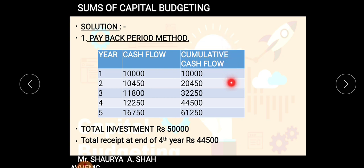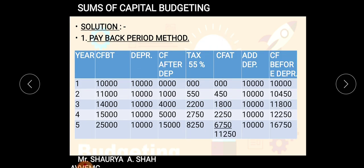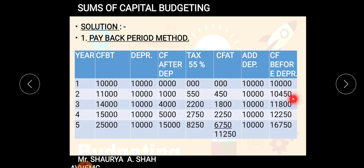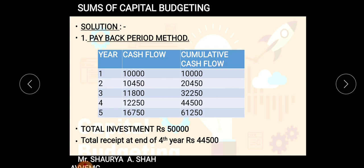On that basis, we calculated the cumulative cash flow. There are two methods: fixed cash flow (same every year) and cumulative cash flow (fluctuating). When cash flow is fluctuating, you calculate the total cumulative cash flows for every year. The last column — cash flow before depreciation — is totaled cumulatively: year one stays the same, year two is year one plus year two, and so on. The cumulative cash flow amount reached sixty-one thousand two hundred fifty.